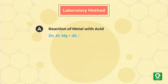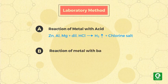Method A: reaction of metal with acids. Zinc, aluminium, or magnesium react with dilute hydrochloric acid to produce hydrogen gas along with the chloride salt.